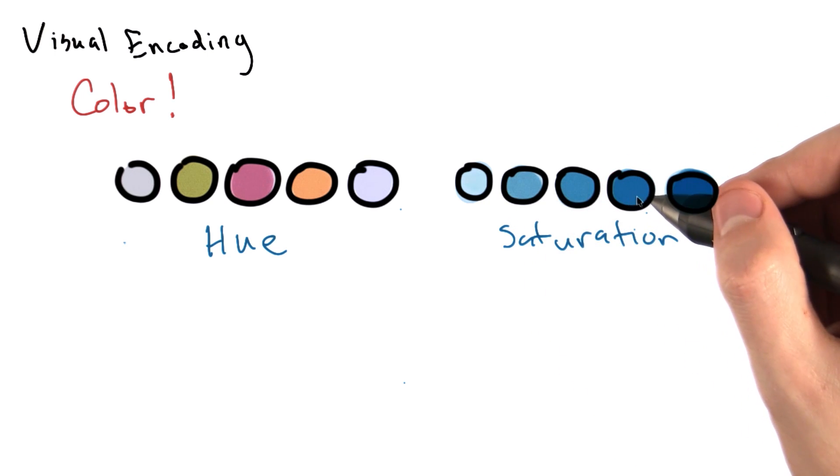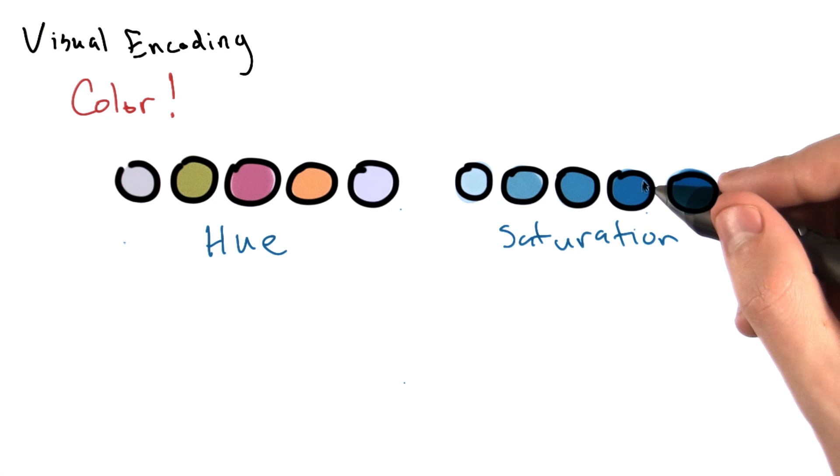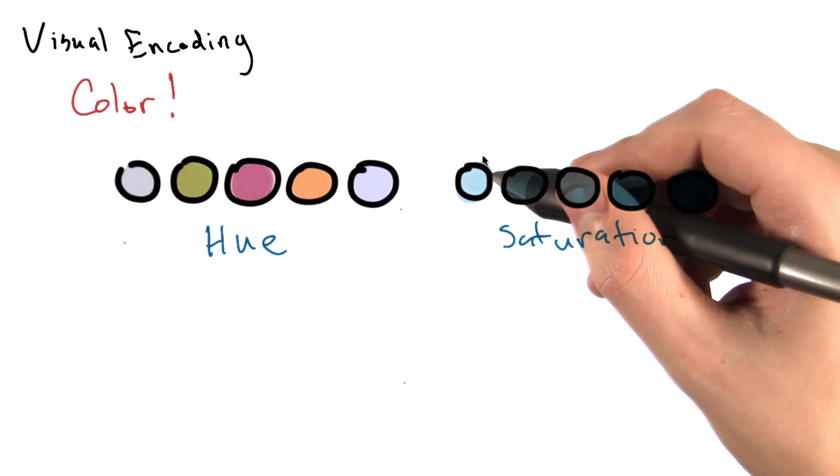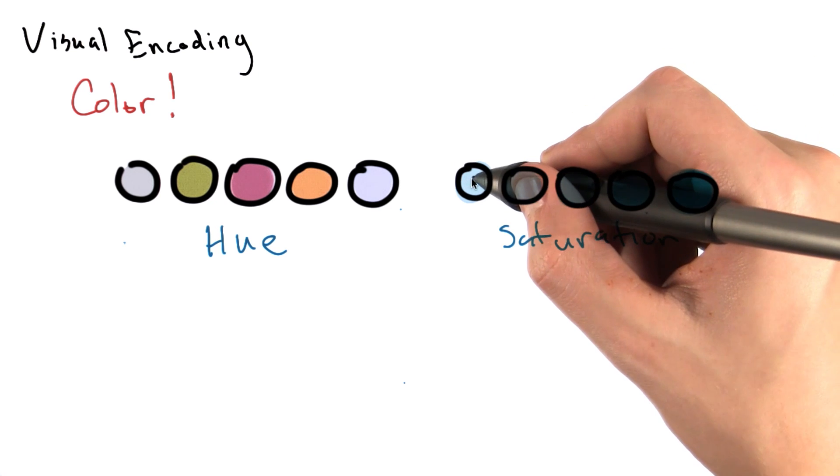We usually use saturation to encode intensity or quantity of a value. So maybe if we were encoding number of home runs with saturation, more home runs would be darker and fewer home runs would be lighter. Or if we were encoding Udacity enrollments, more enrollments would be darker and fewer enrollments would be lighter.